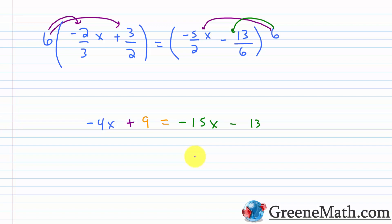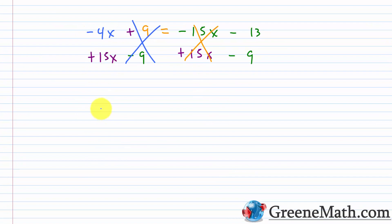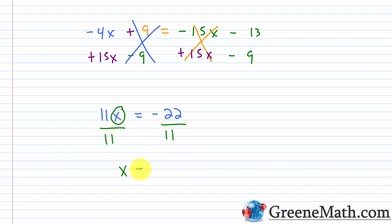If you don't want to clear fractions, you don't have to — but now let's proceed. Moving all variable terms to one side and constants to the other: add 15x and subtract 9 from both sides. Negative 4x plus 15x is 11x on the left. On the right, negative 13 minus 9 is negative 22. Dividing both sides by 11 gives a final answer of x equals negative 2.